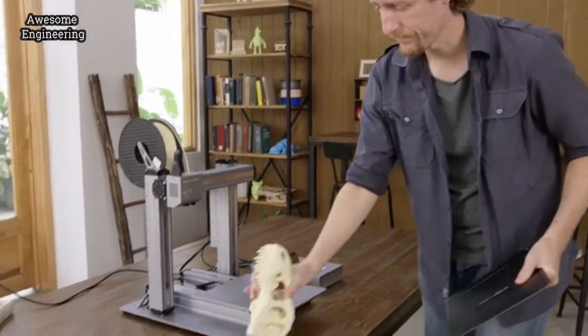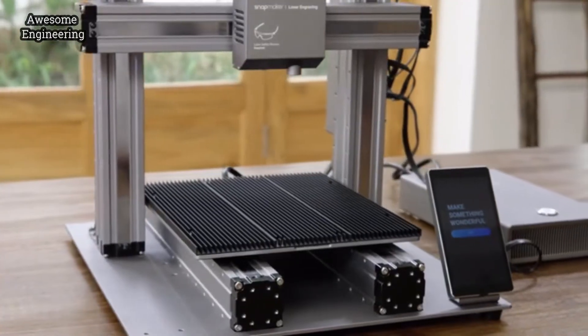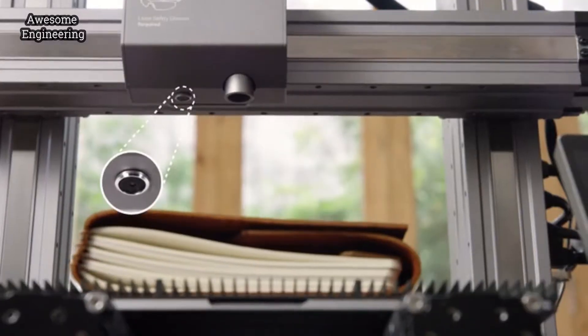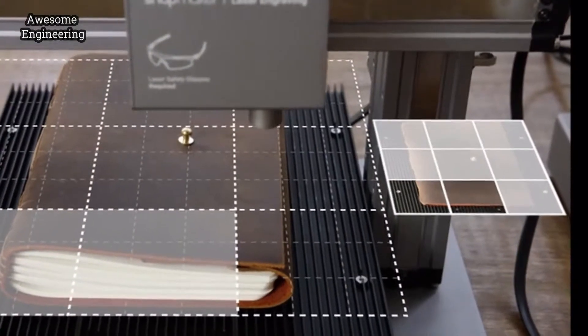For laser cutting, it uses a specially designed aluminum grid table. Its built-in camera allows you to preview a design on any material or surface.